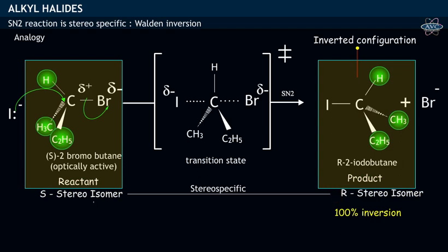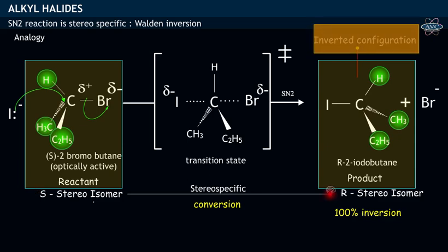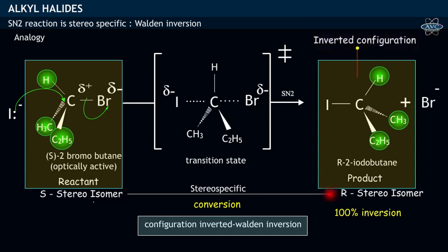This phenomenon of conversion of one type of stereoisomer, say S in the reactant, into a different and completely inverted stereoisomer, R, as in the case of the product, is said to be Walden inversion.